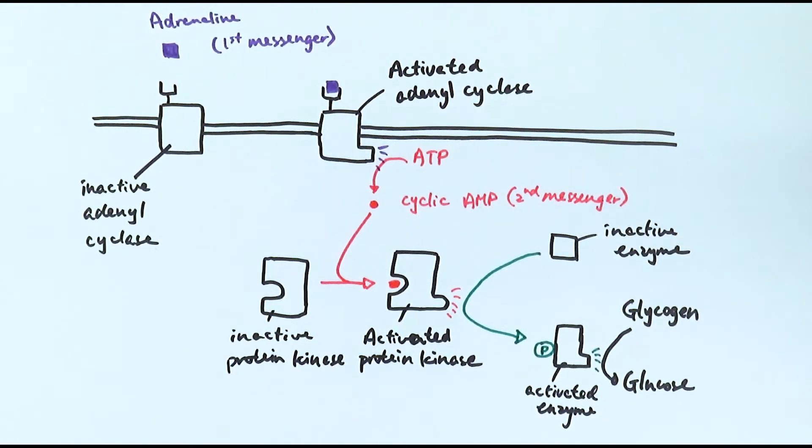To summarize the action of adrenaline: the adrenaline acts as the first messenger and it will bind to a specific receptor on the cell surface membrane. That receptor is part of an enzyme called adenyl cyclase, and once the adrenaline binds to it, it will activate adenyl cyclase and convert ATP to cyclic AMP which acts as the second messenger.